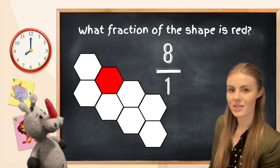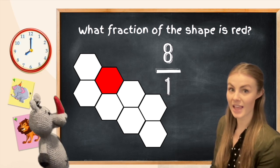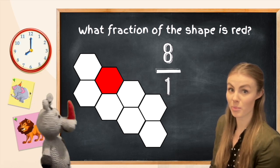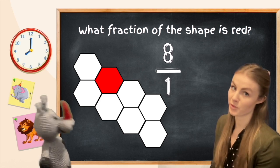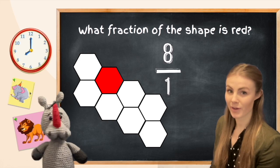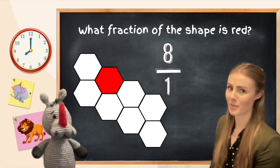So Pig says that because our shape has been split into eight equal parts we put that eight as our top number, and that because one of those parts is colored in we put that one as our bottom number. But she's actually got this the wrong way around and it's a really easy mistake to make.